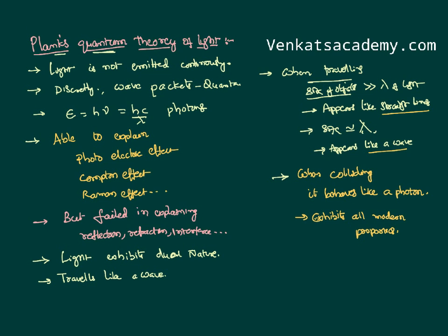As we are unable to identify a single theory to explain all properties of light, we live with the concept of the dual nature of light. The dual nature tells us that light travels like a wave; when the size of the objects is large it appears as a straight line, and when colliding it behaves like a particle — a photon — exhibiting modern day properties like the photoelectric effect, Compton effect, and Raman effect.